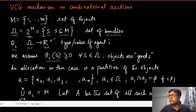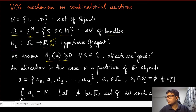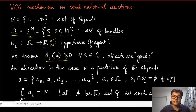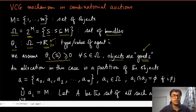Even though the mapping goes to the whole real line, we will only focus on the non-negative part, meaning valuations are always non-negative. This is also referred to as the objects being 'goods' — they always give non-negative valuation, possibly zero if you don't want the object, but never negative. Contrast this with 'bads,' where an object allocated to you is costly, giving you negative valuation. We exclude such settings from our discussion of combinatorial auctions.